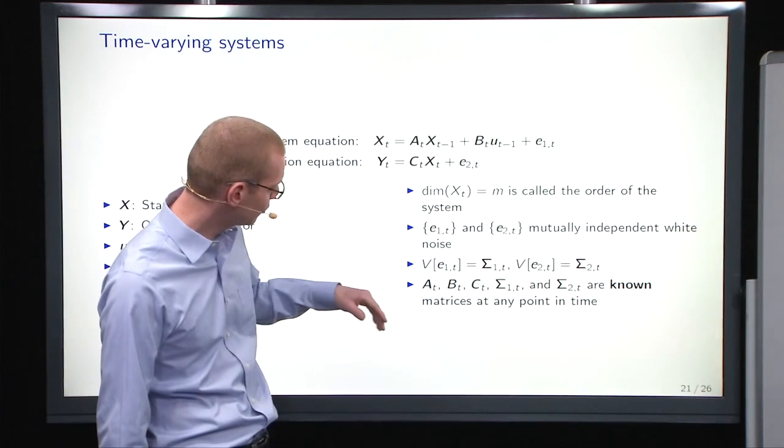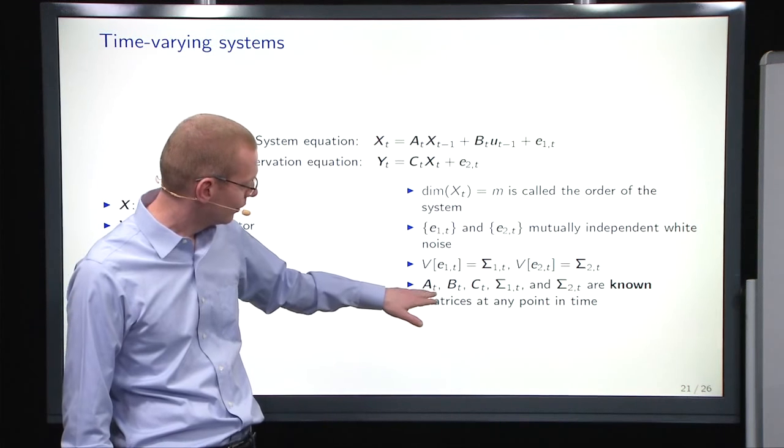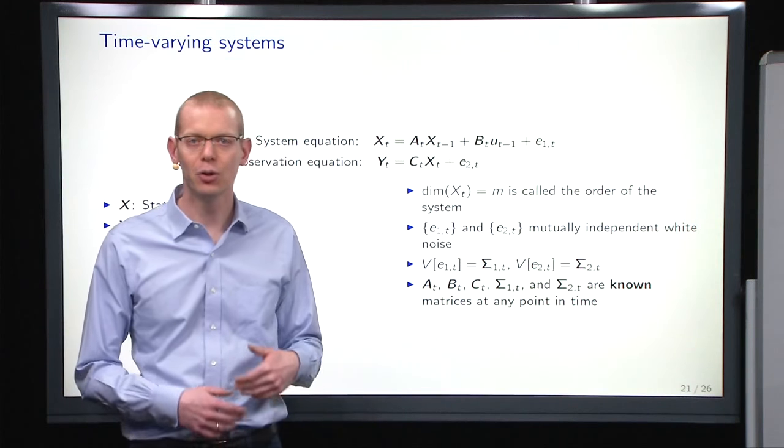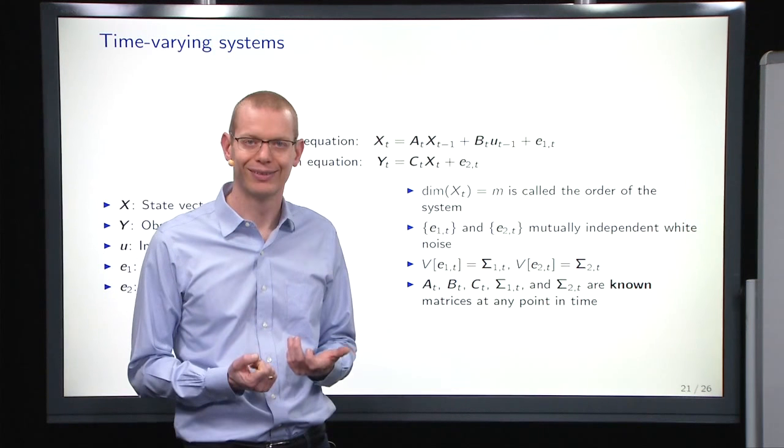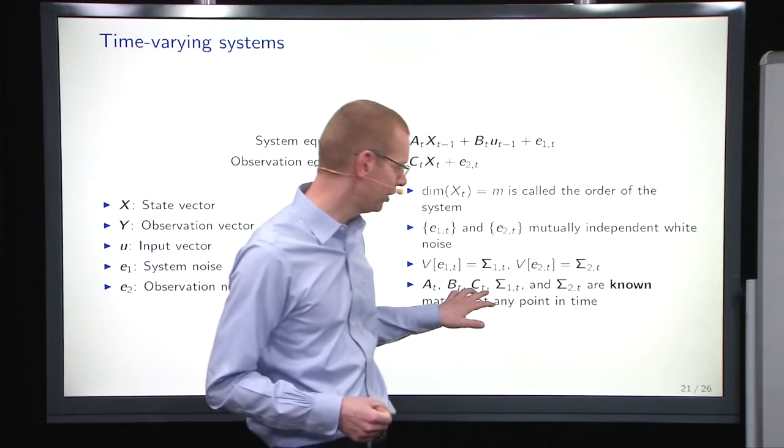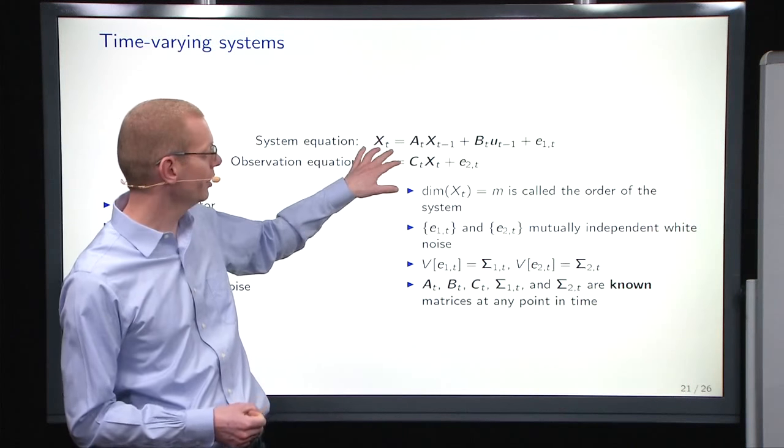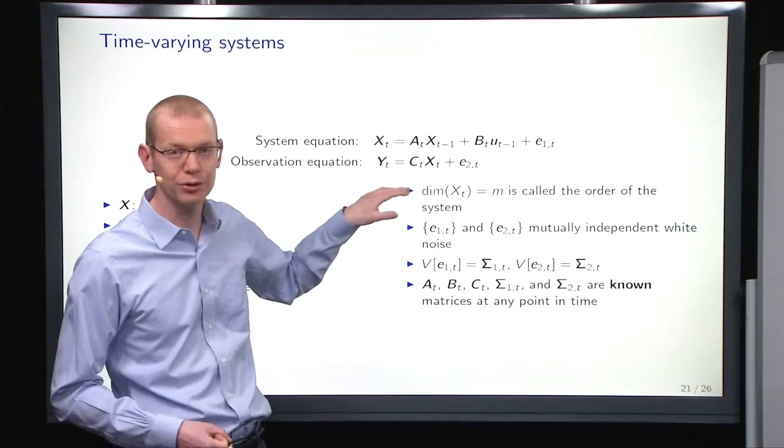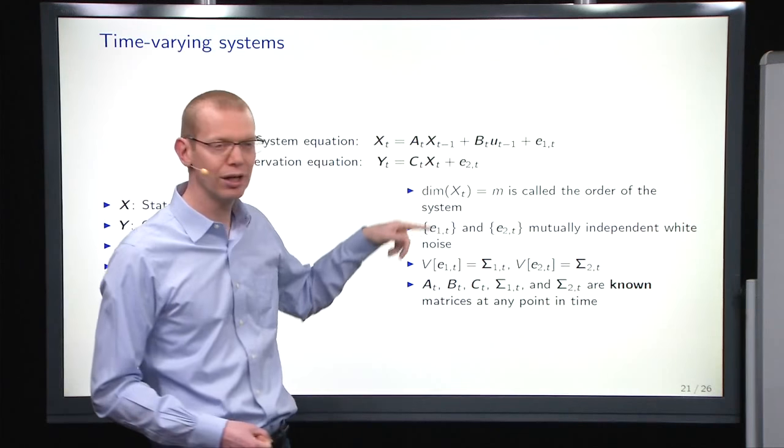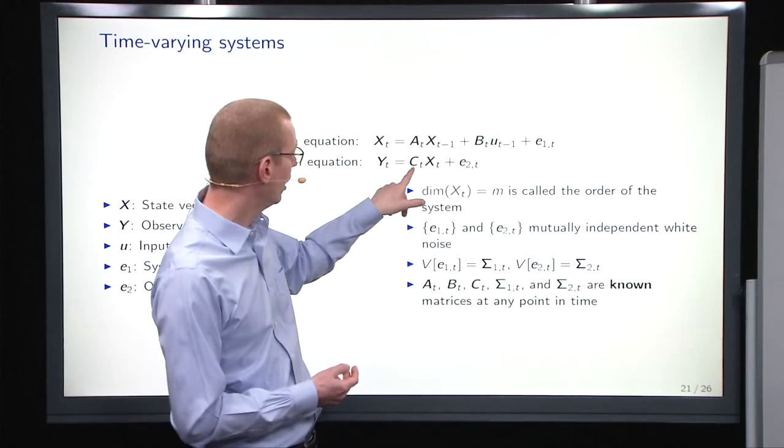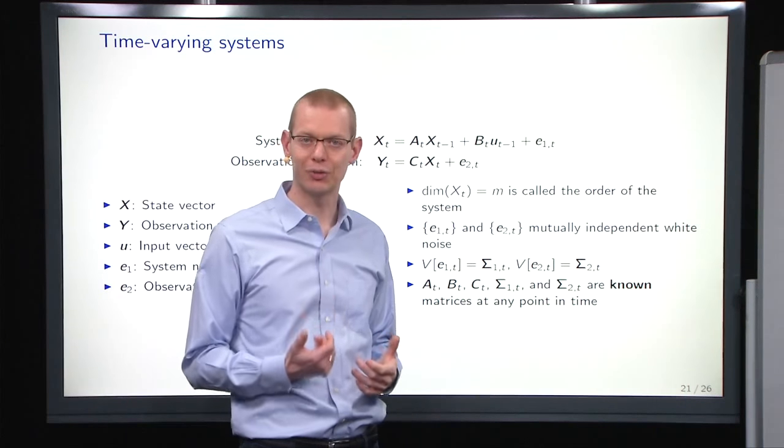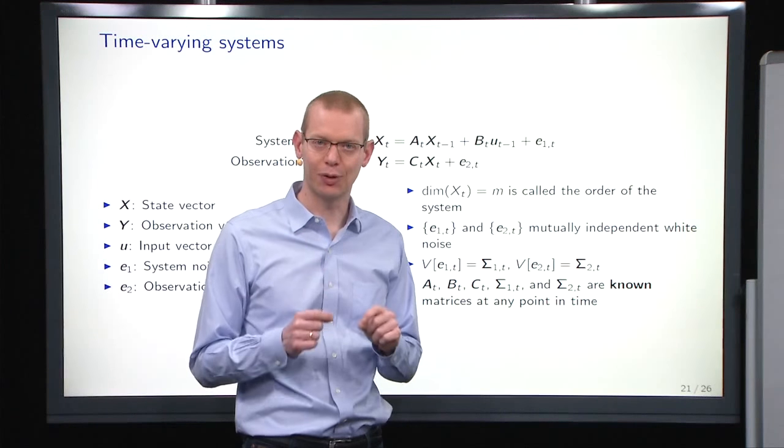Now, one case could be that we have these matrices here. Say the observation equation here is no longer just something fixed. It could be in a linear regression where the X input is here, but what you make is a model here for the parameters. So you have a model here that resembles theta in a linear regression model, and then you have the regressors here in your C, and you update them with the corresponding values at each point in time.